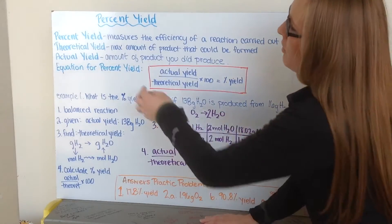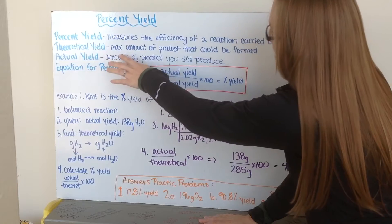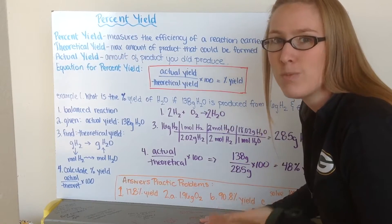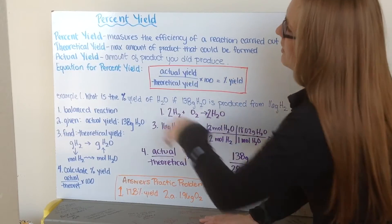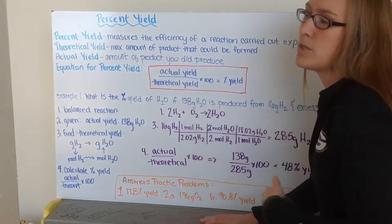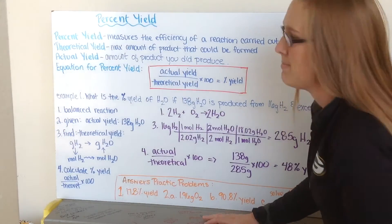I have something called my theoretical yield, which is the maximum amount of products that could be formed. This is where you use your stoichiometry to figure out how much should you have made. Then we have something called your actual yield, which is the amount of product you did produce. In the lab, how much you actually made.